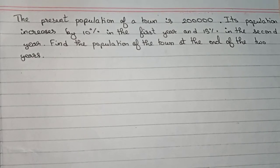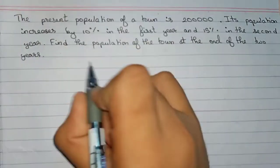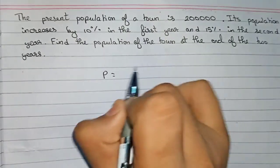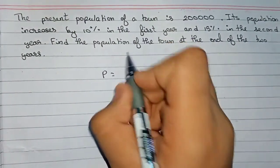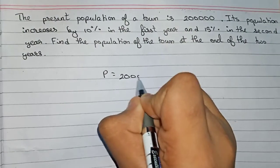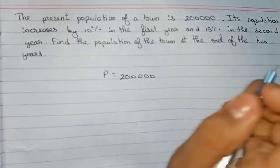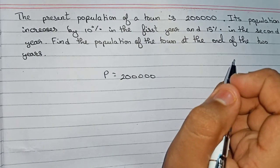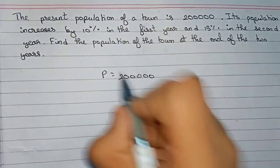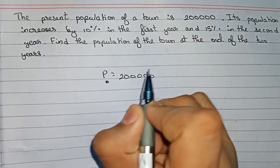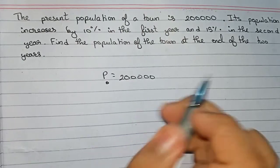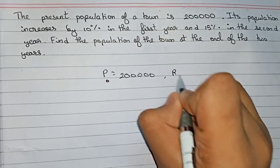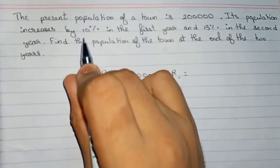First, write all the information which is being given. Write the principle. In this question, we write the principle as the population, that is 2,00,000. In this type of population-related question, we need to give P₀, this is the symbol. So P₀ equals two lakh. Now R1, that is the rate for first year, is given 10 percent.